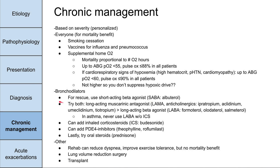In general, you start with the rescue inhaler and add drugs down the list. At the very end, you can try oral steroids, but there are many side effects — Cushing syndrome, fat redistribution, skin thinning, osteoporosis — so try to avoid them as much as possible. There's also pulmonary rehab including pulmonary toilet, which can reduce dyspnea and improve exercise tolerance, though with no proven mortality benefit. Lung volume reduction surgery has shown some benefit, and transplant is an option for select patients who have stopped smoking.